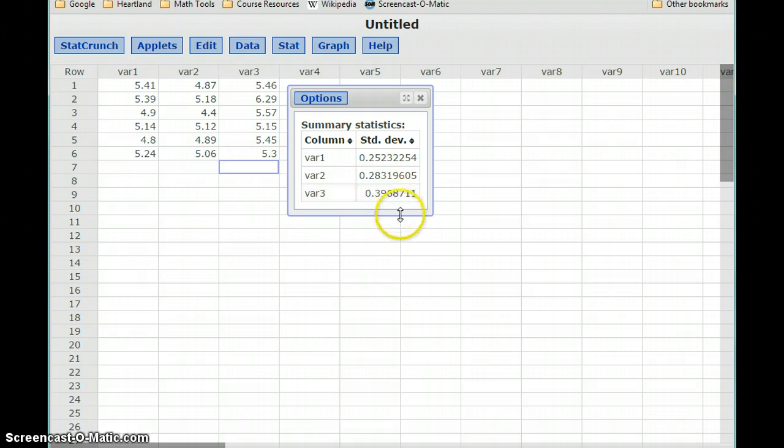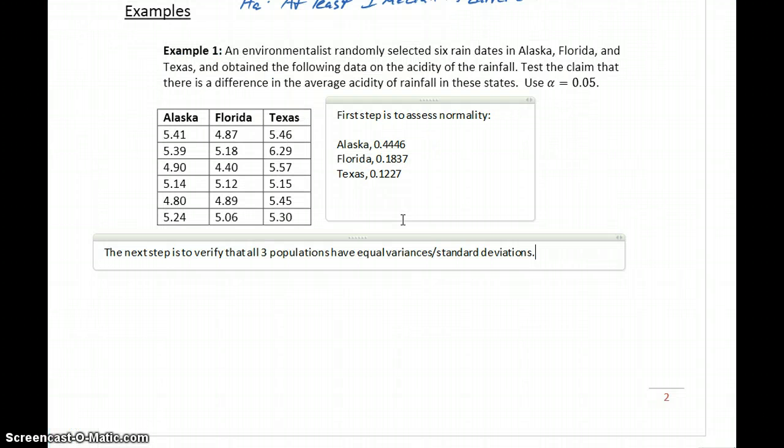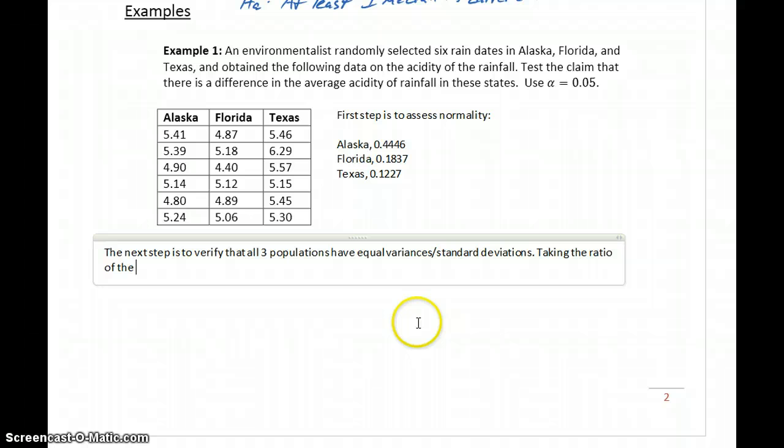What we need to do is take our largest standard deviation, divide it by our smallest standard deviation, and verify that that is something less than or equal to 2.